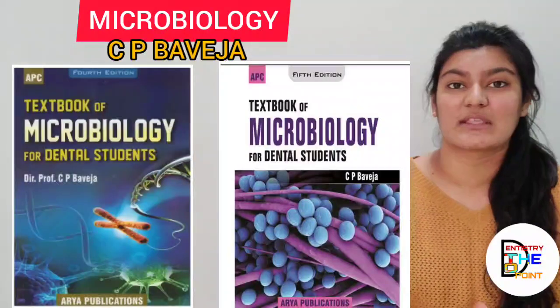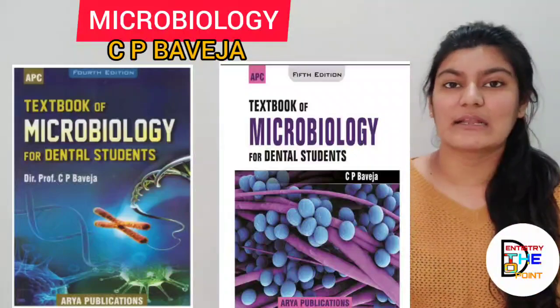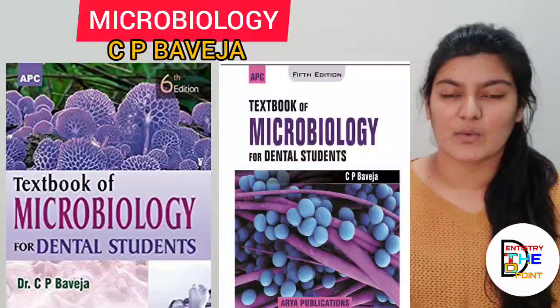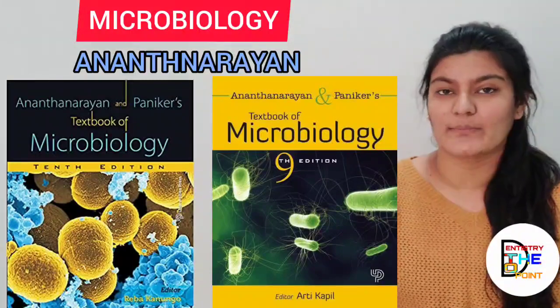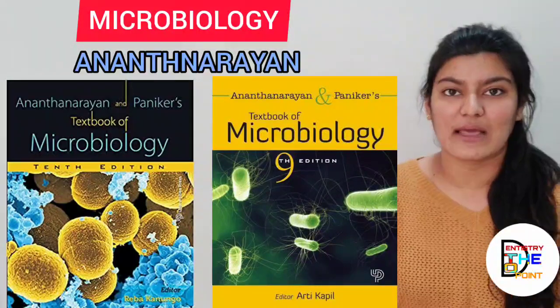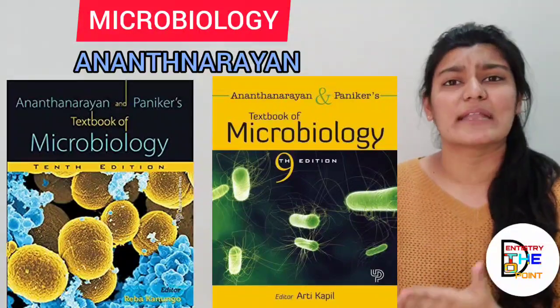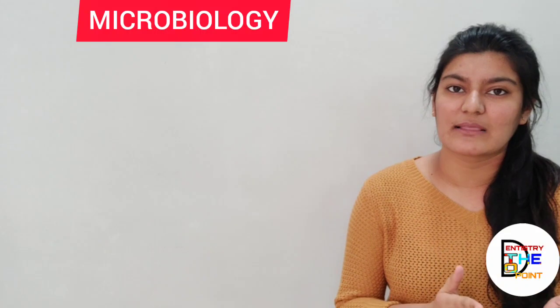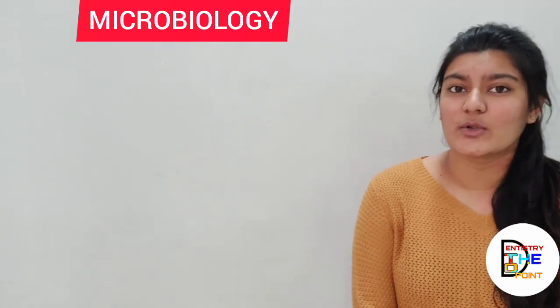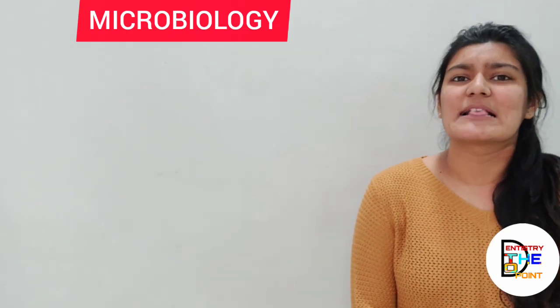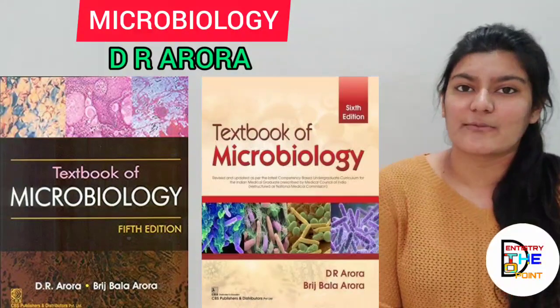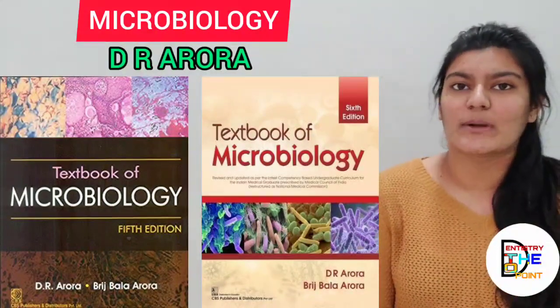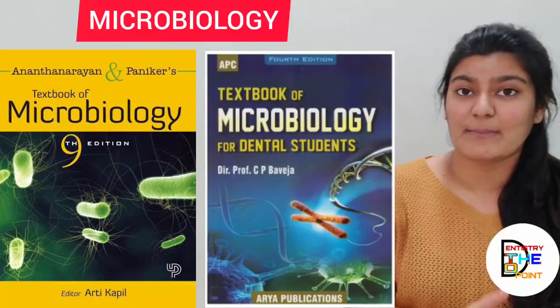Next is microbiology. There are three books to refer: CP Bavecha, Anant Narayan, and Arura. According to me, the best book is CP Bavecha — everything that is necessary in dentistry microbiology is covered in it. The difference I found between CP Bavecha and Anant Narayan is that Anant Narayan covers bacteria in very detailed form compared to CP Bavecha, and I think that level of detail is unnecessary since pathology and microbiology exams happen together in second year. So I would suggest CP Bavecha as the best book, Anant Narayan as second, and Arura as third. You can choose between CP Bavecha and Anant Narayan.